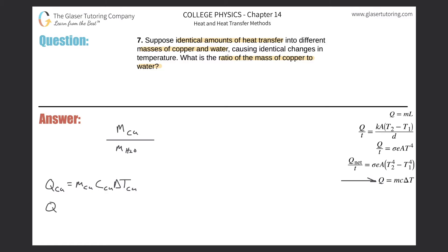I can also write this equation out for water: the heat gained or lost by the water equals the mass of H₂O multiplied by the specific heat of H₂O, then multiplied by the change in temperature of that H₂O. Now notice within these formulas, here is my mass of copper and here is my mass of water. So now I can solve this equation for the mass of copper and solve this one for the mass of water.